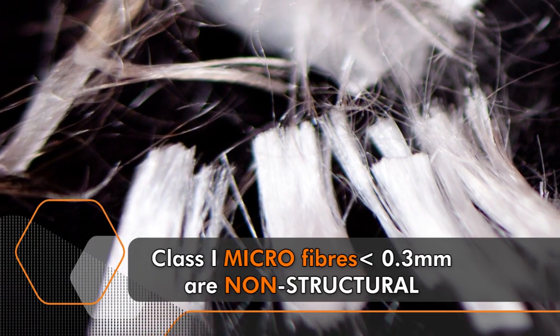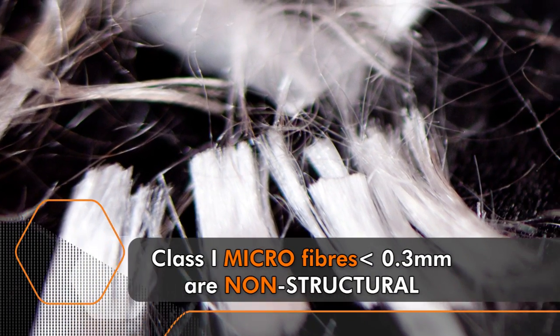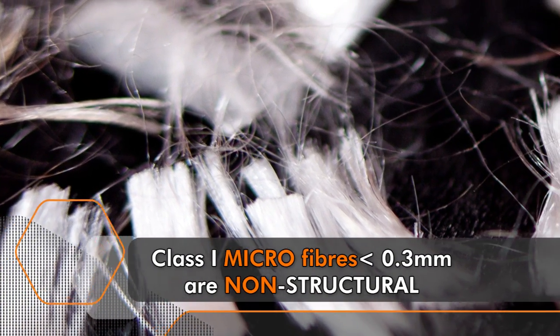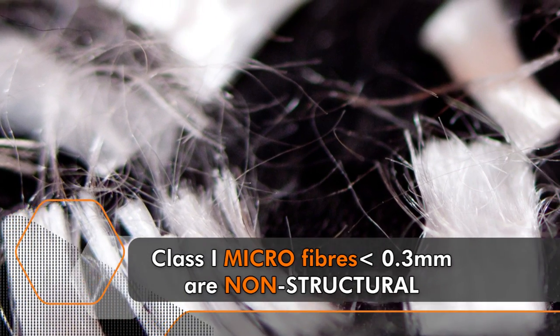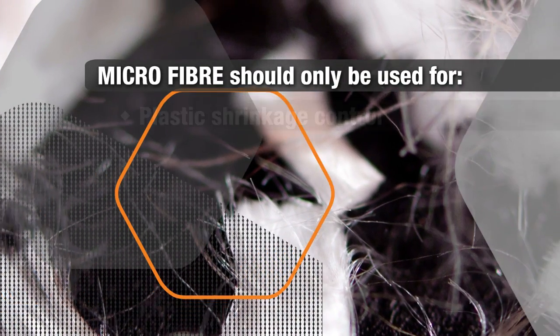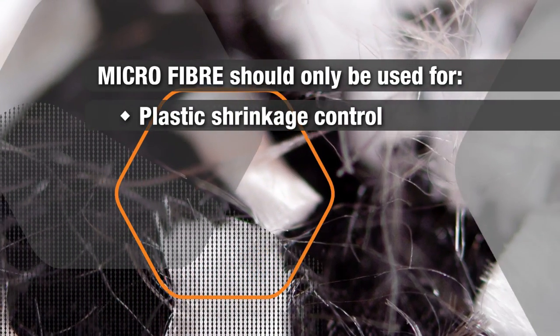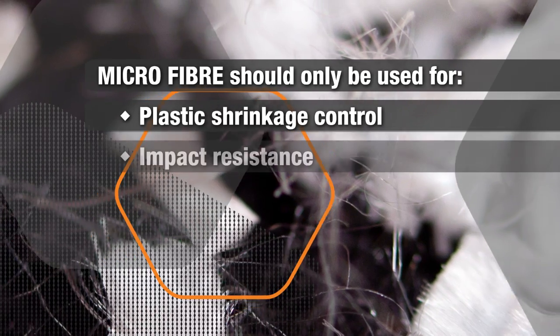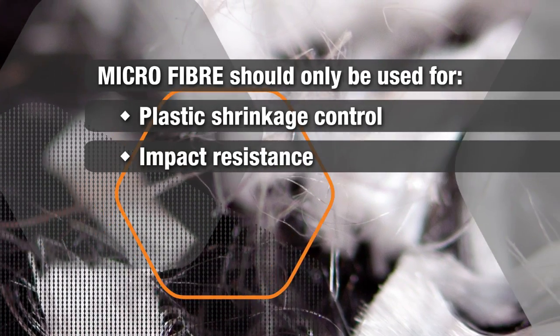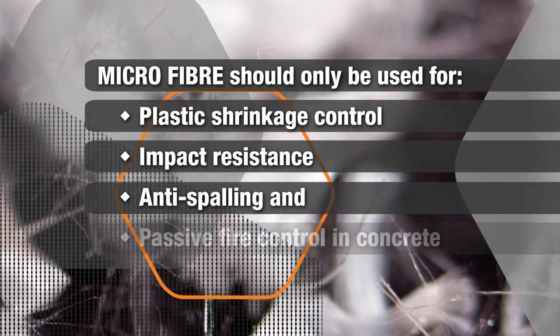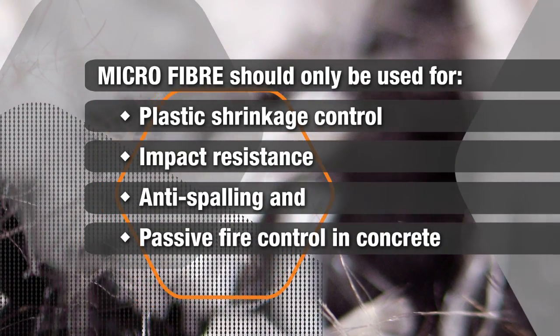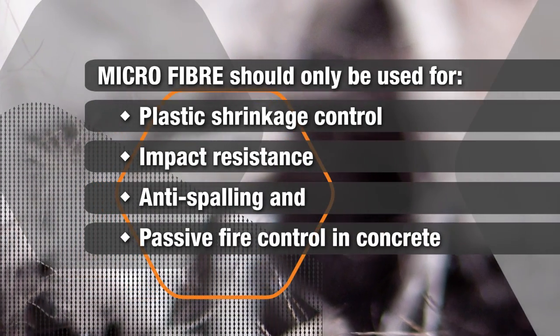Class one micro fibers, less than 0.3 millimeters in diameter, are non-structural and should only be used for plastic shrinkage control, impact resistance, anti-spalling, and passive fire control in concrete.